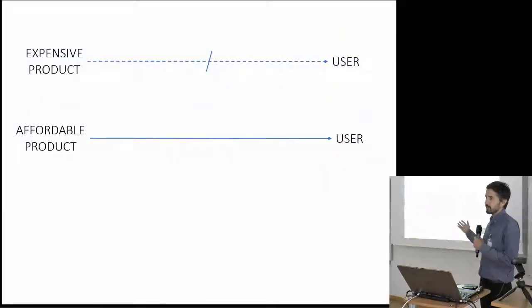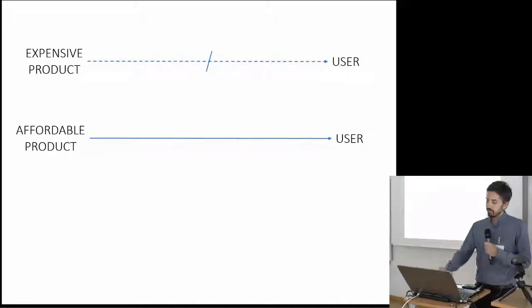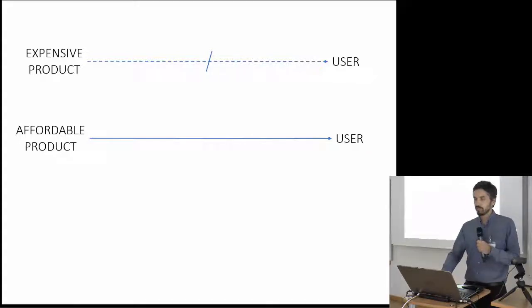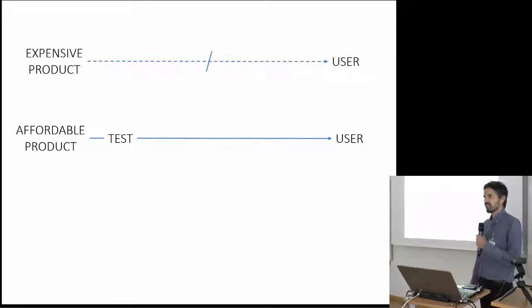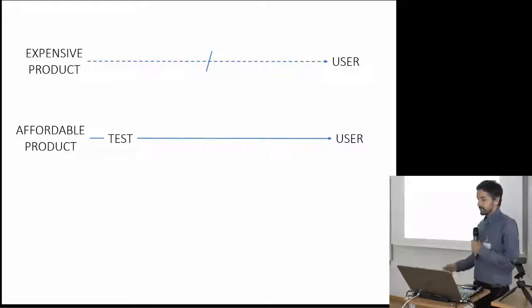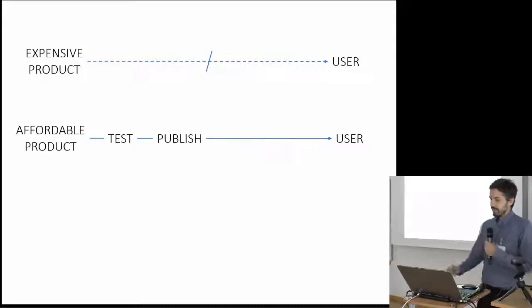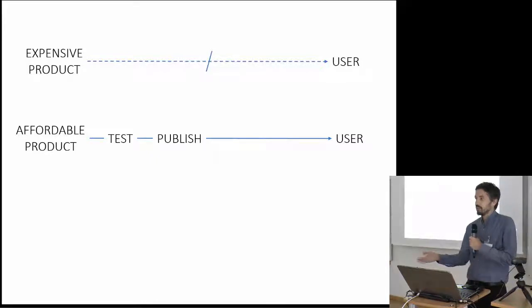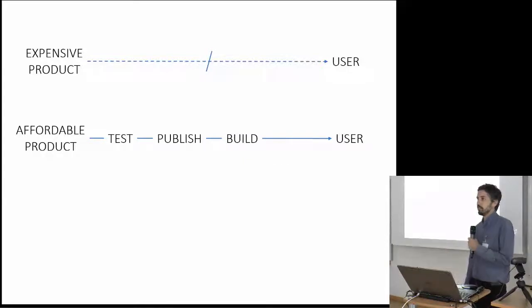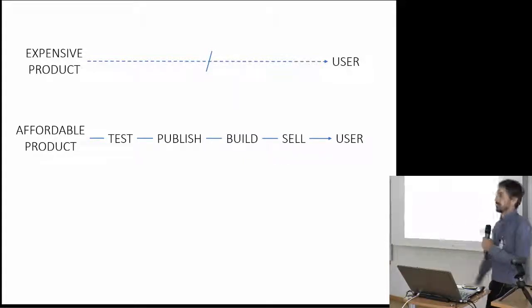But did it work like that? Well, we made an affordable product, but the first thing we got was that users said: it's low cost — does it work? Maybe it's low cost, low quality. So we had to test it, and not only test it, we had to publish it in a peer-reviewed journal so that researchers would believe us. And then we only had an article — we needed to find someone that could build that platform and sell it and get it to the user.